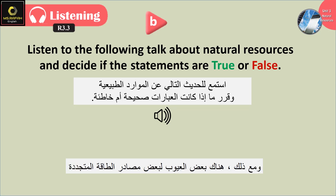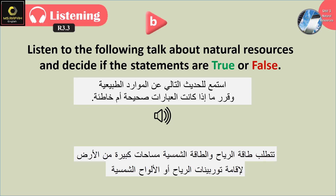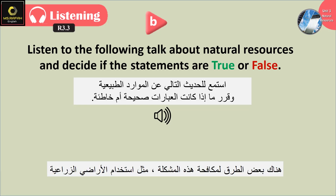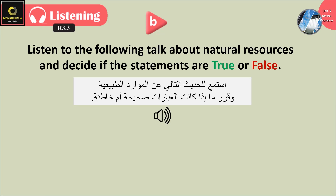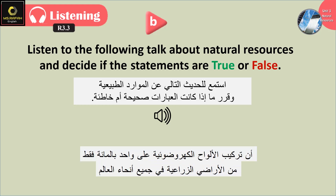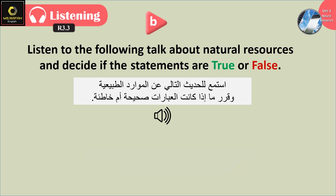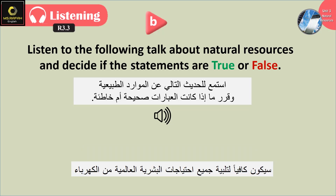However, there are some disadvantages to certain sources of renewable energy. Wind and solar power require large masses of land to erect wind turbines or solar panels. There are some ways to combat this issue, such as using farmland. Researchers from Oregon State University estimate that installing photovoltaic panels on just 1% of crop lands worldwide would be enough to meet all of humanity's global electricity needs.